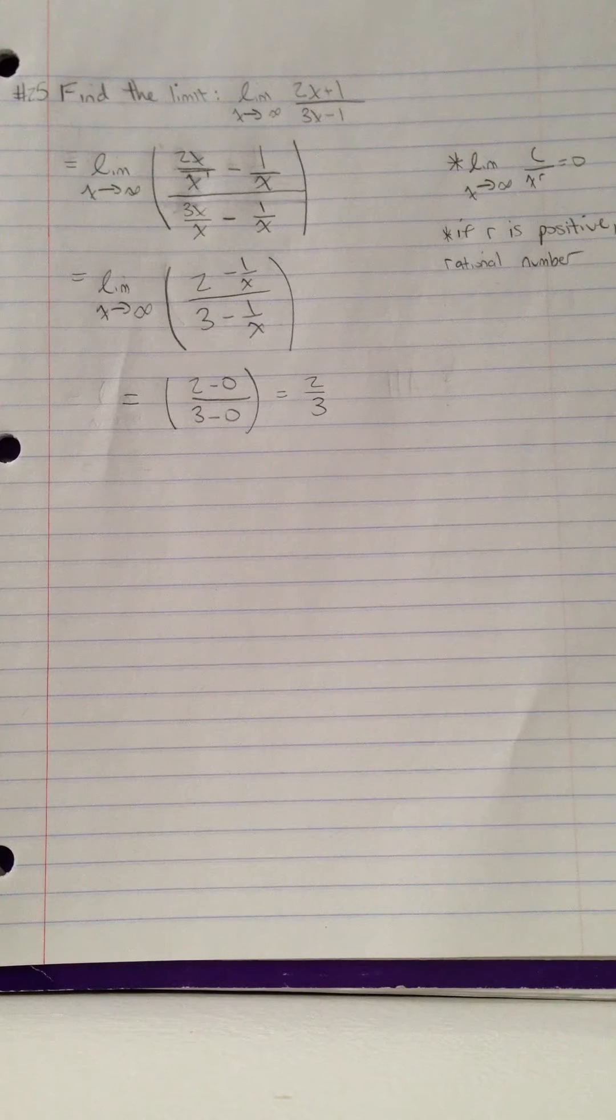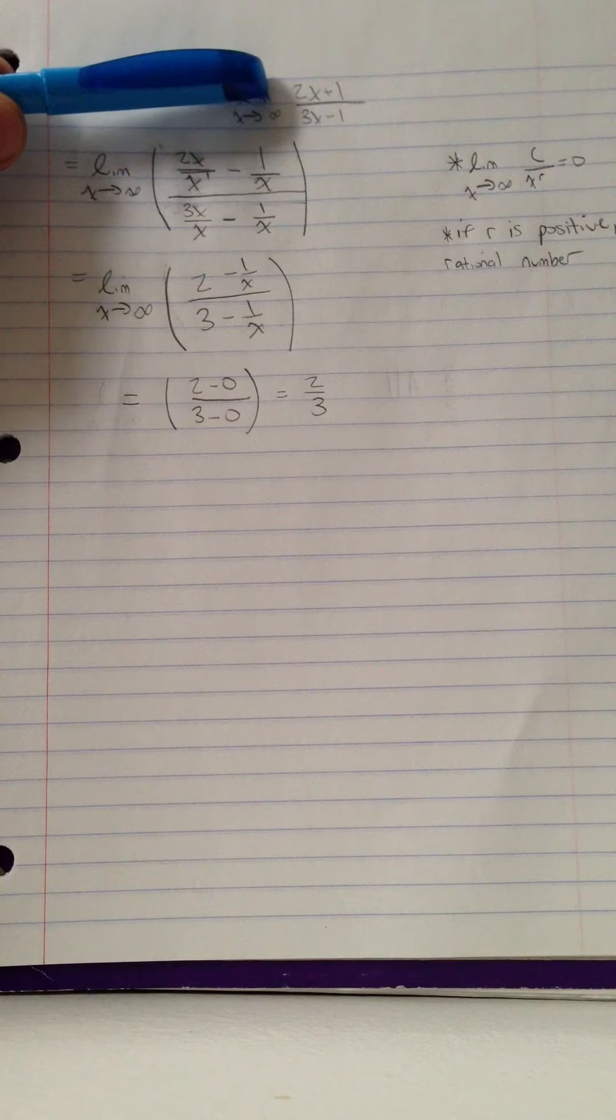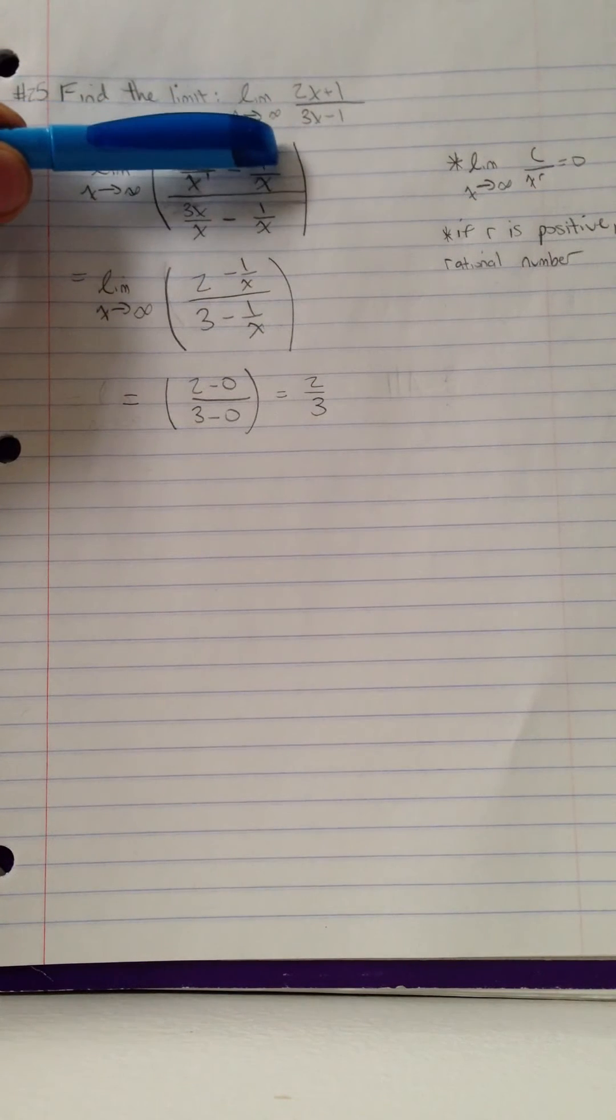The first step is to check the degrees of each x on the numerator and denominator. We can see that 2x is raised to the power of 1 and 3x is raised to the power of 1.